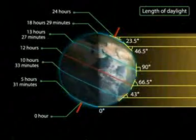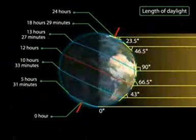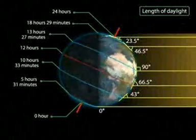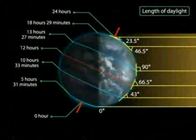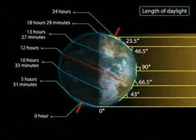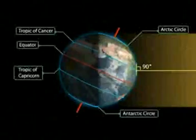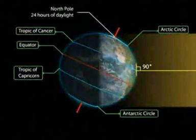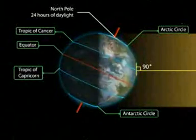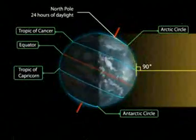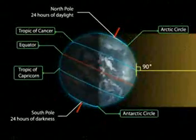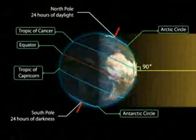On this day, the length of daytime of the northern hemisphere is the longest in the year, while that of the southern hemisphere is the shortest in the year. Besides, there are 24 hours of daylight at the Arctic Circle, and 24 hours of darkness at the Antarctic Circle.